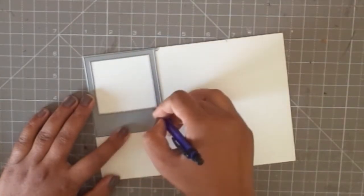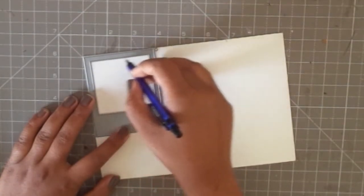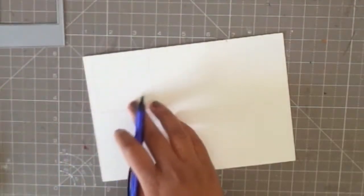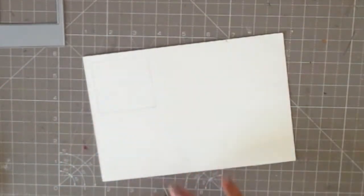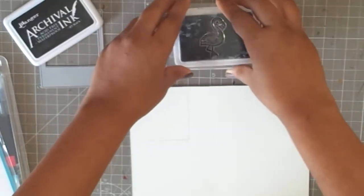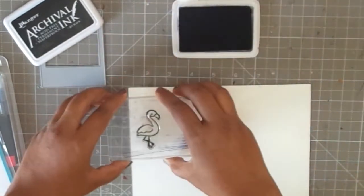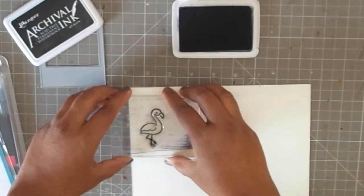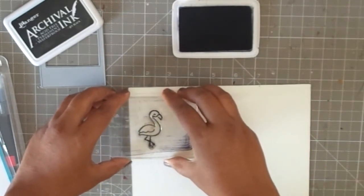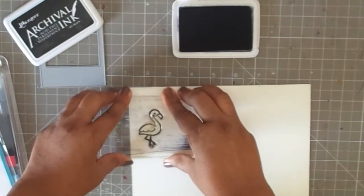Now to start with, I have this watercolor paper from Canson Montval. I'll leave the link in the description box below. I'm tracing the inside of the Polaroid with a pencil to get the idea of where my scene actually goes. Just be very light-handed with the pencil mark and it won't show in the end project. Now I'm using some watercolor-safe archival ink so it won't bleed when you watercolor.